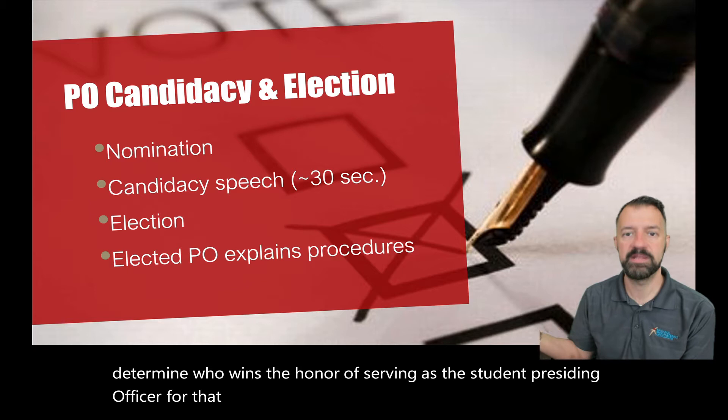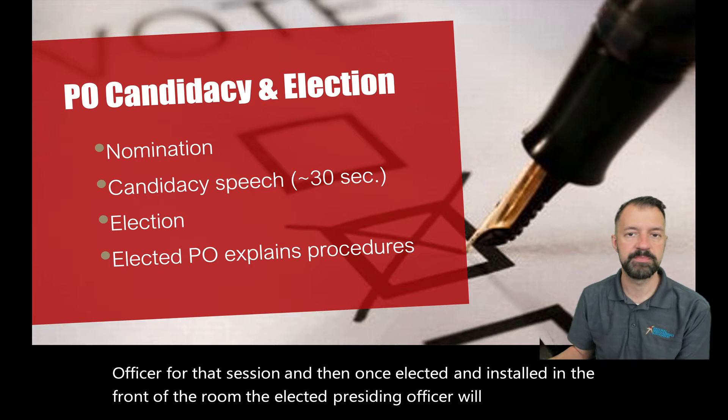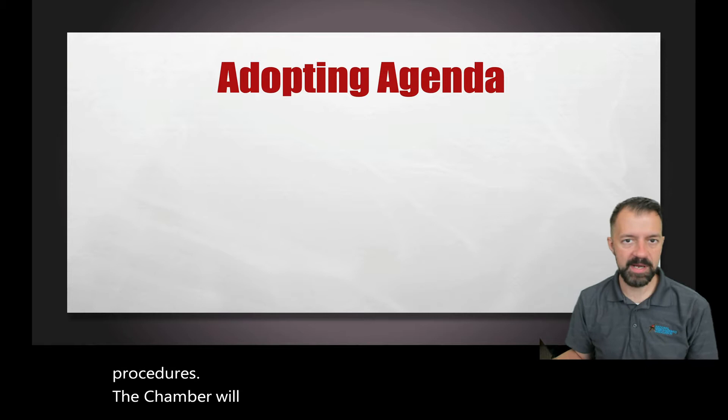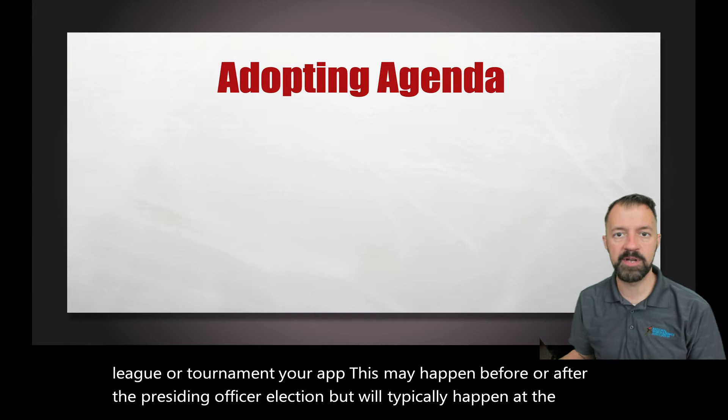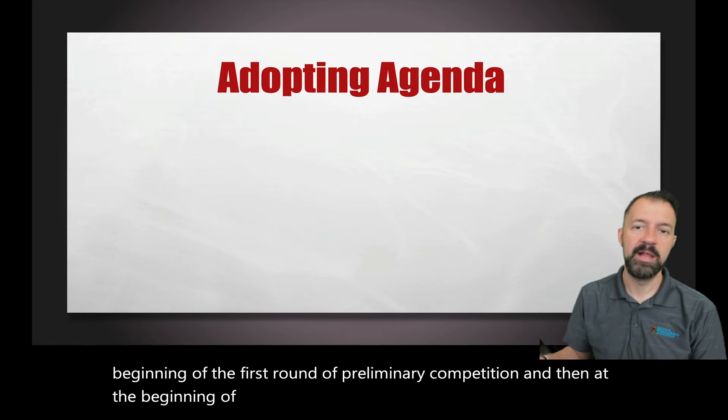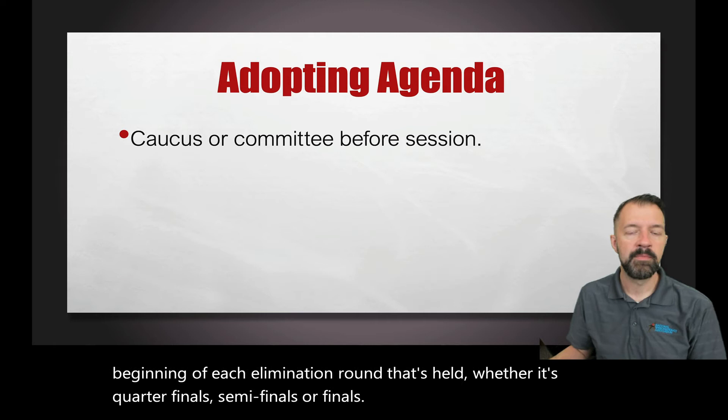Then the adults in the room will typically conduct an election to determine who wins the honor of serving as the student presiding officer for that session. Once elected and installed in the front of the room, the elected presiding officer will explain their procedures. The chamber will typically adopt an agenda depending on the league or tournament you're at. This may happen before or after the presiding officer election, but will typically happen at the beginning of the first round of preliminary competition and then at the beginning of each elimination round — whether it's quarterfinals, semifinals, or finals.